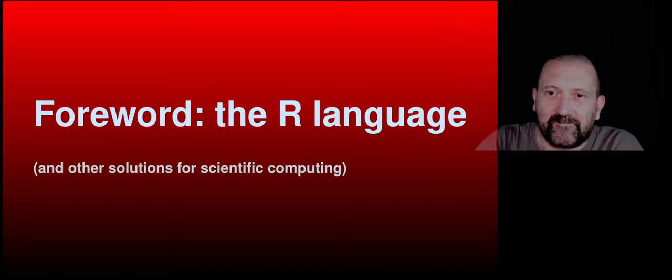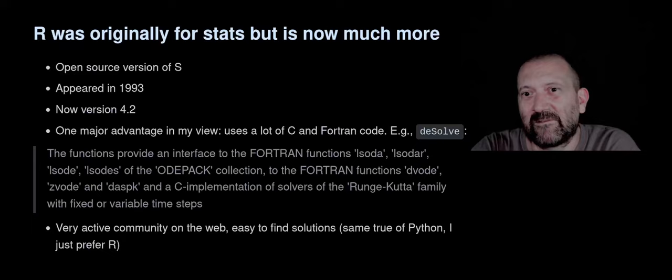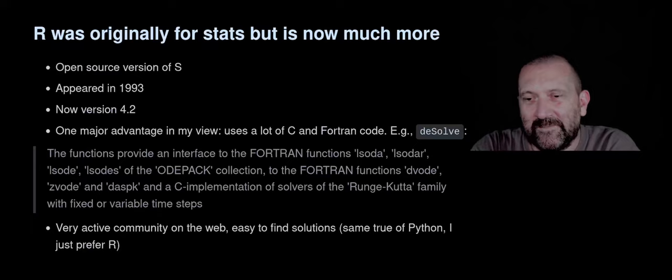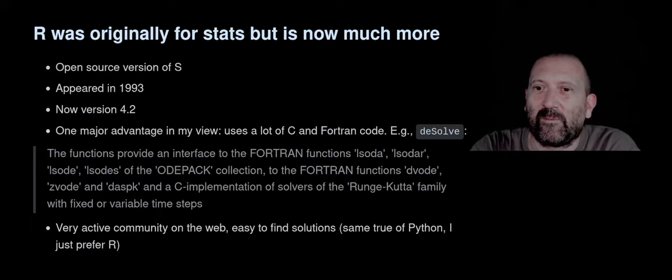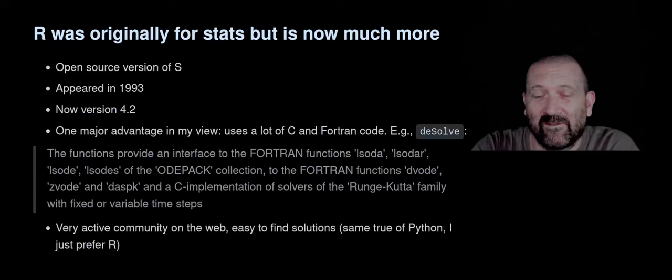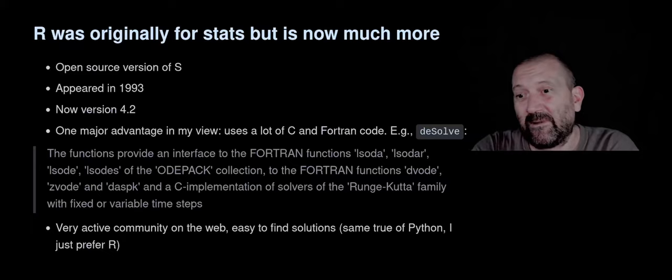One of the reasons I like R is that although it's originally a language for statistics, it is now much more than that. R is an open source version of another language called S, and R appeared in 1993. So it's quite a mature language — almost 30 years old — and it's now in version 4.2.